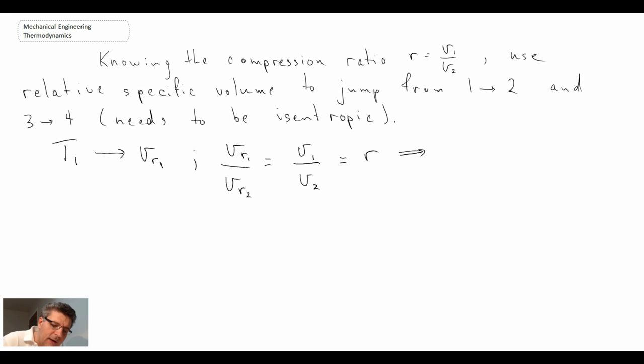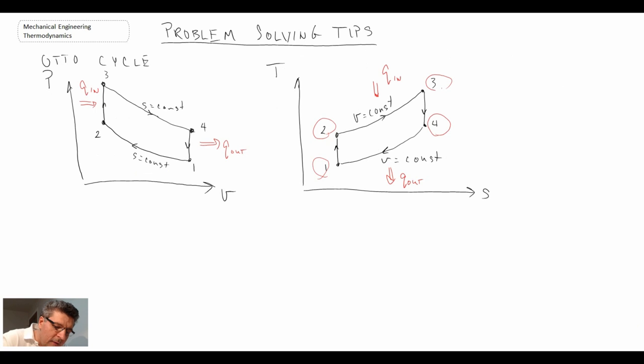And consequently, once you know VR one from the tables in the back of the book, and the compression ratio, you can then get VR two and then go back into the table again and get temperature at two. Now once we have temperature at two, so that would be the temperature at this point, so we would know this temperature.